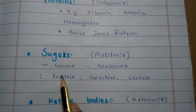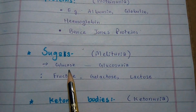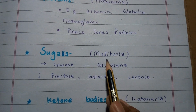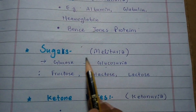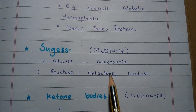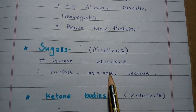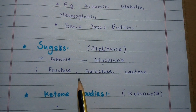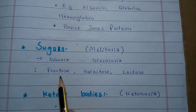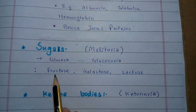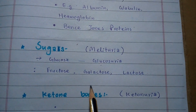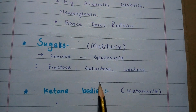Number two is sugars. The presence of any sugar in the urine is called mellituria. If glucose is present, the condition is called glucosuria. Other sugars can also be present in the urine which make the urine abnormal. These sugars may be fructose, galactose, lactose, or pentose.